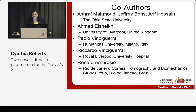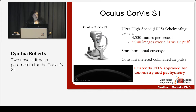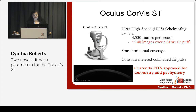Dr. Ahmed El-Sheikh provided the corrected IOP value, which I'll describe. The characterization of the air puff was done at Ohio State. As you are familiar with the Oculus Corvis ST, it's an ultra high-speed Scheimpflug camera. The frame rate is greater than 4,000 frames a second, so in the 31-millisecond air puff produced by the device, there are about 140 images produced.